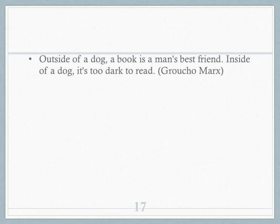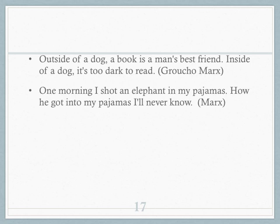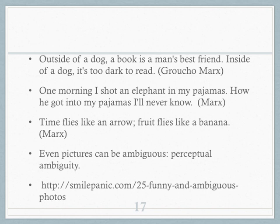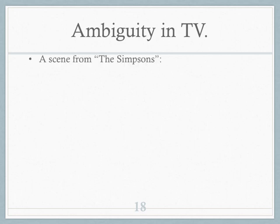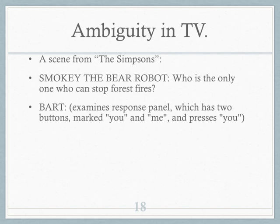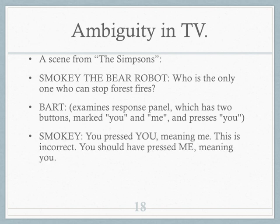Here are some funny jokes from famous comedian Groucho Marx — let you read through those on your own and determine the ambiguity. And from The Simpsons: Bart Simpson is talking to Smokey the Bear robot, who asks, 'Who is the only one who can stop forest fires?' There are two buttons: 'you' and 'me.' Bart presses 'you,' and Smokey says, 'You pressed you, meaning me — this is incorrect. You should have pressed me, meaning you.' So pronouns can be ambiguous.